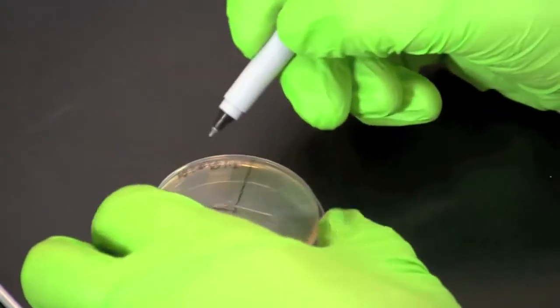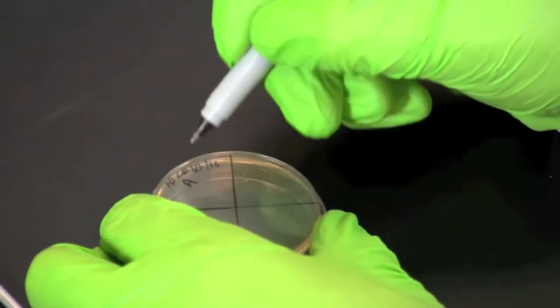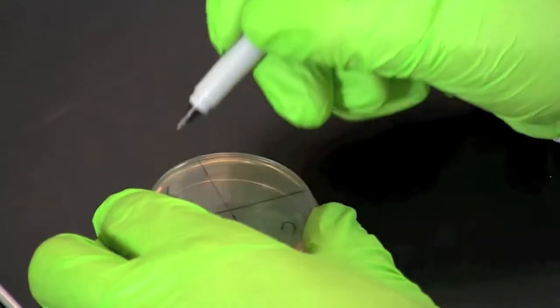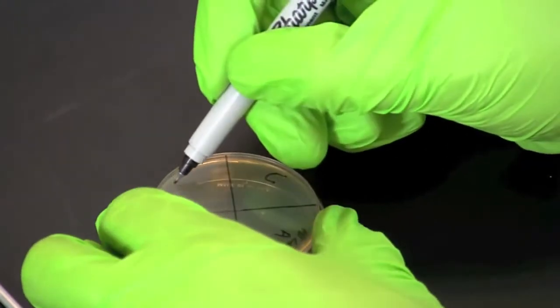Label the quadrants C, A, T, and K for control, ampicillin, tetracycline, and kanamycin.